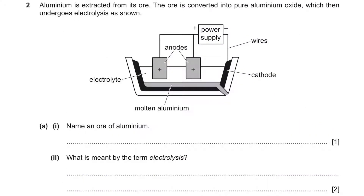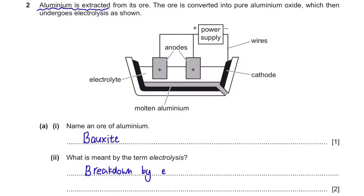Question 2: aluminium is extracted from its ore. The ore is converted into pure aluminium oxide, which then undergoes electrolysis. Name an ore of aluminium — the answer is bauxite. What is meant by the term electrolysis? We need to memorize this definition: it is the breakdown by electricity of an ionic compound in the molten state.